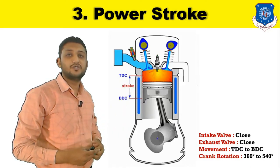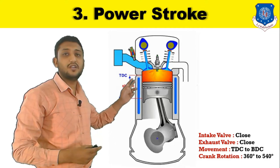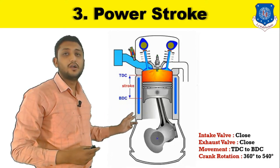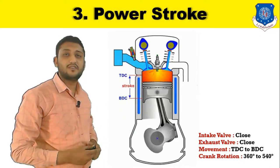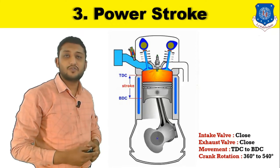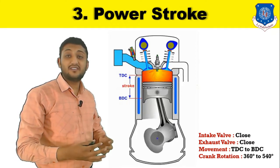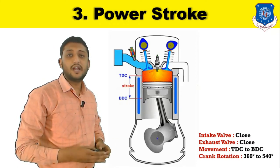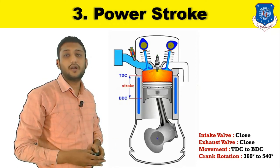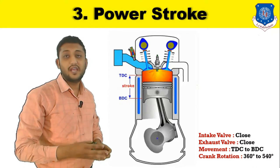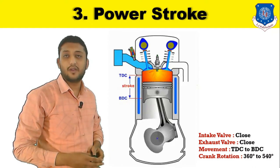Due to that explosion, the piston is forced from top dead center to the bottom dead center. During the power stroke, the temperature inside the combustion chamber is around 200 to 250 degrees Celsius in case of petrol engines.